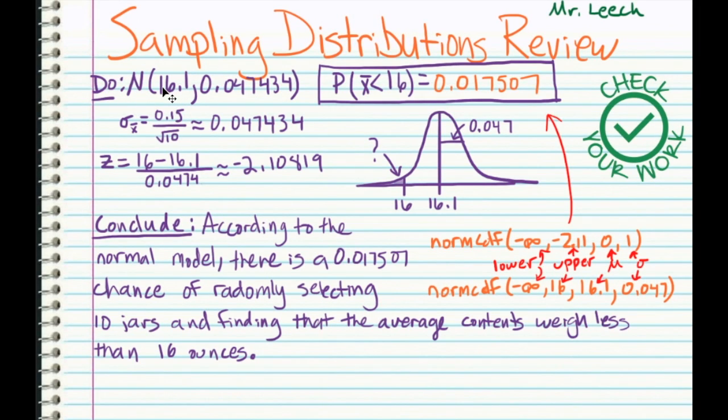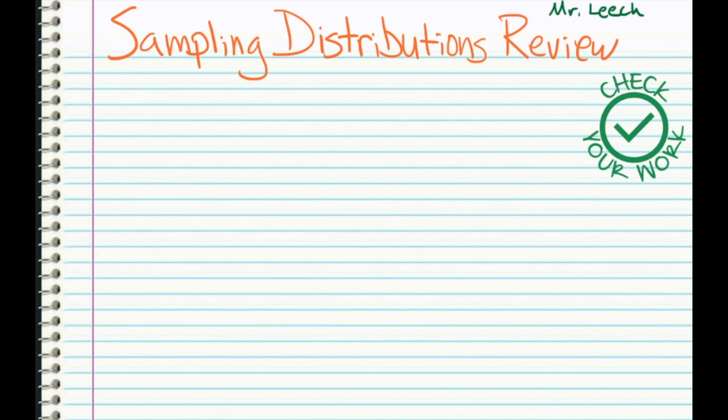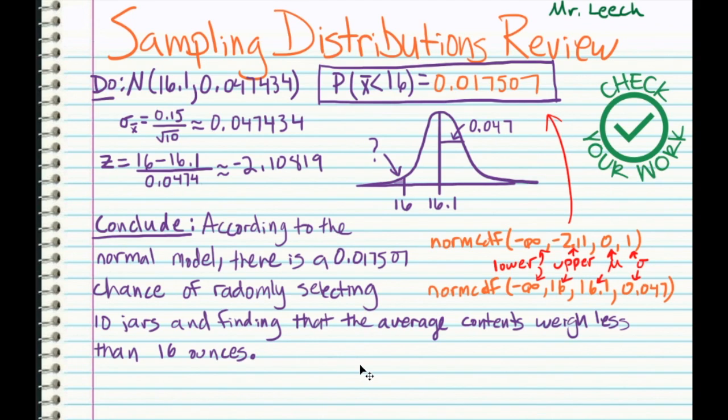If you're told the total number of jars produced, you could check that, but clearly they make more than 100 jars at a peanut factory. Let's do our do step. So we have a normal model that is centered at 16.1 with a standard deviation of 0.047434. We got that from our standard deviation formula. This time, it's sigma divided by the square root of n. So here's a picture of this distribution. Notice how much further 16 is away this time. It is over two standard deviations below the mean. So do your calculations, either using the z-score in the table or the calculator, and you should get 0.017507. So according to the normal model, there is a 0.017507 chance of randomly selecting 10 jars and finding that the average contents weigh less than 16 ounces. So there's a pretty big difference in getting 25% and about 1%. And this difference is because we did a sampling distribution of size 10 instead of just selecting 1. Again, evidence that when we increase the sample size, that standard deviation is going to decrease.